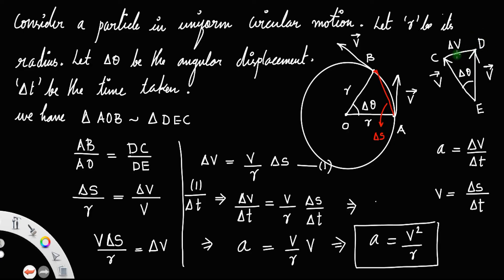Since, if you take the direction of delta V, the direction of delta V will always be towards the center. If you draw delta V here, it is parallel to this and definitely directed towards the center. So there is an acceleration always directed towards the center, and we call that centripetal acceleration.